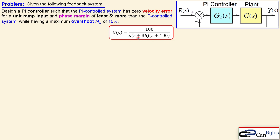You see the pole at the origin, the pole at minus 36 and also at minus 100. We would like to design a PI controller such that this PI controlled system has zero velocity error for a unit ramp input and it has a phase margin at least five degrees more than the P controlled system while having a maximum overshoot of 10 percent. So there are a couple of parameter specifications here together.